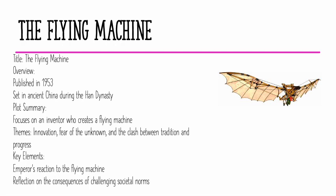The Flying Machine is another short story, published in 1953. It is set in ancient China during the Han dynasty and focuses on an inventor who creates a flying machine. The main themes are innovation, fear of the unknown, and the clash between tradition and progress.